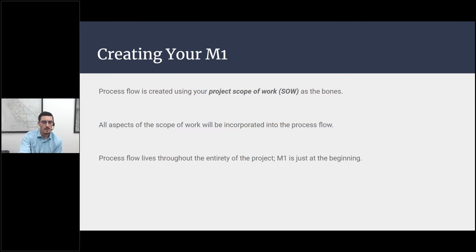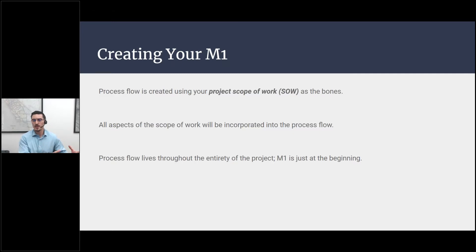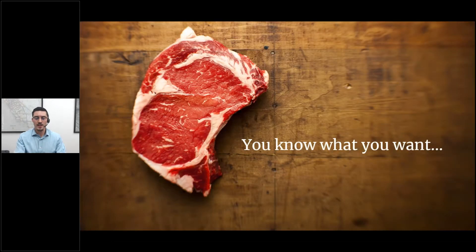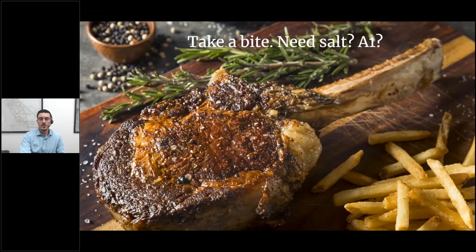The process flow lives throughout the entirety of the project. The M1 is really the beginning part — that first 10 to 15 percent — of building and getting the whole process flow ready so it can exist throughout the project. An analogy I like to use: you're ordering food at a restaurant. Let's say you go to a restaurant and say 'I want a steak' — that's the project, that's the end result you know you're looking for.